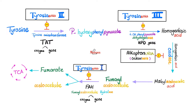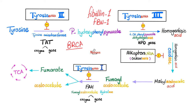If you recall from my video on Marfan syndrome, the defective protein was fibrillin-1, and the gene mutation was FBN1. How about the BRCA gene mutation that can lead to breast cancer? Why do we call it BRCA? Literally, breast cancer. I mean, if the exam question gives you the answer in the name itself, there's no excuse to get it wrong.